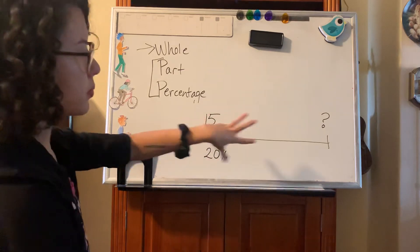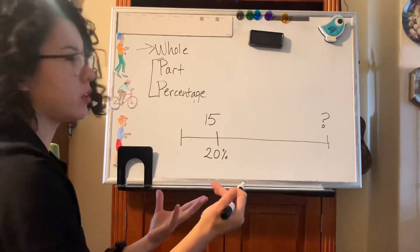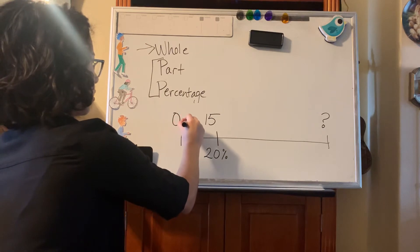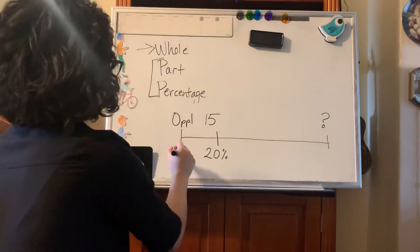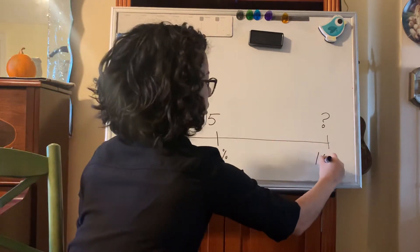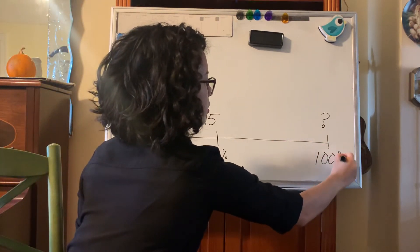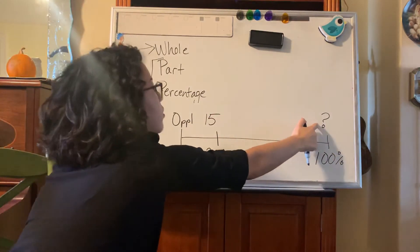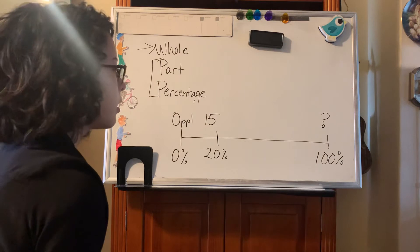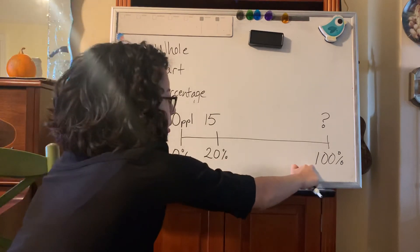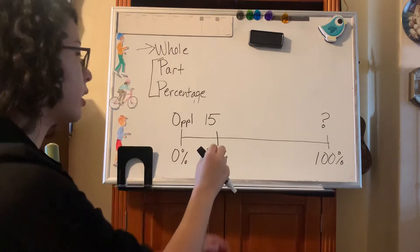Okay now this looks pretty sparse but what other information can we fill in? Well we know that this is zero people. I'm going to just put ppl for people. This is also zero percent and then we also know that over here we've got 100 percent. Okay, our goal is that whole over there. What is this whole? That's what we're trying to find.